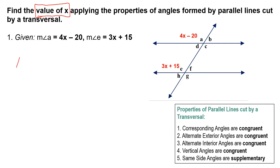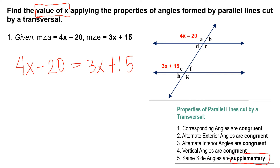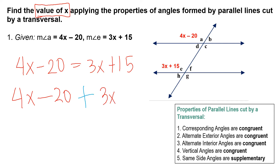If they are congruent, we equate them: 4x minus 20 equals 3x plus 15. But if they are not congruent, the only other option is supplementary — in which case we add the two angles and equate the sum to 180: 4x minus 20 plus 3x plus 15 equals 180.